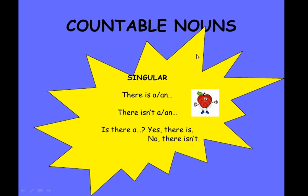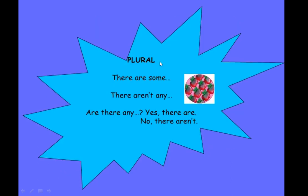Countable nouns are nouns which can be counted in numbers. When singular: there is a/an, there isn't a/an, is there a — yes there is an apple, no there isn't an apple. In the plural: there are some apples, there aren't any apples, are there any apples — yes there are, no there aren't.